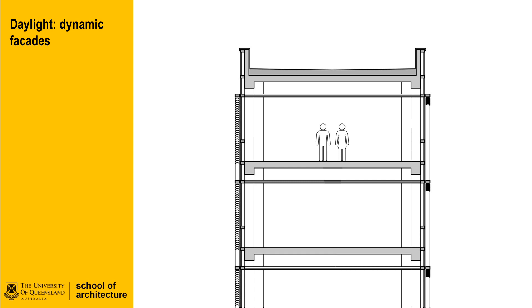In many instances where building orientation is not ideal, the use of active shading systems can reduce glare and heating load at specific times of the day. The benefit of active systems is that for those times when the sun is not directly hitting the facade, the blinds can be fully retracted to increase the amount of daylight in a building.